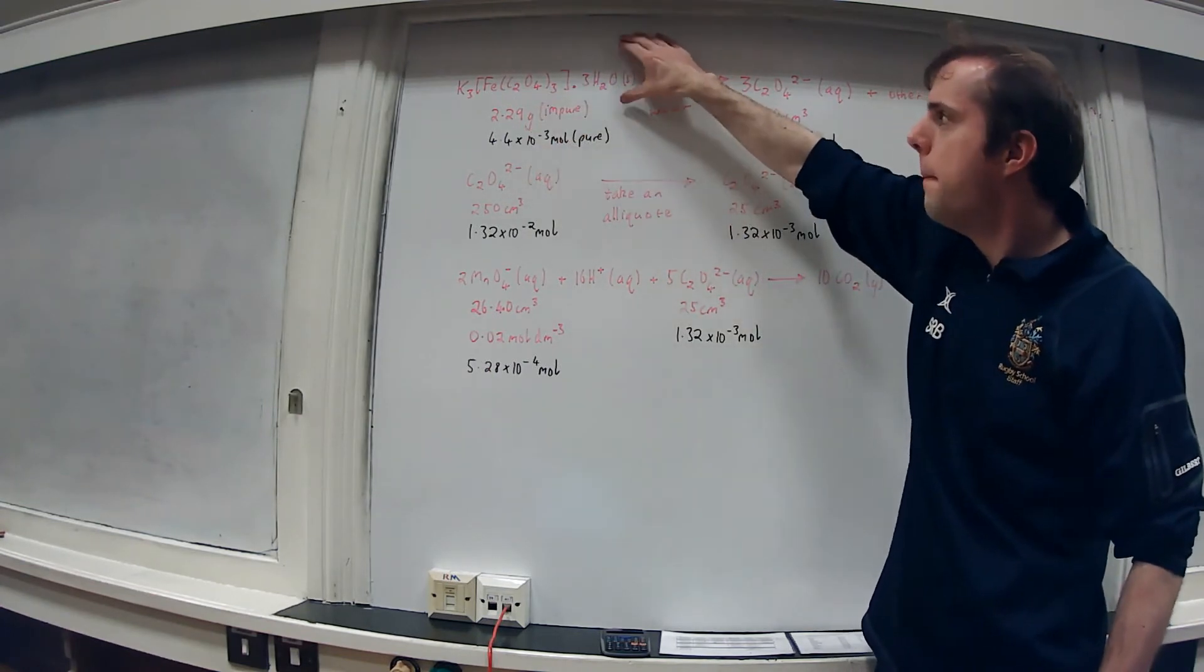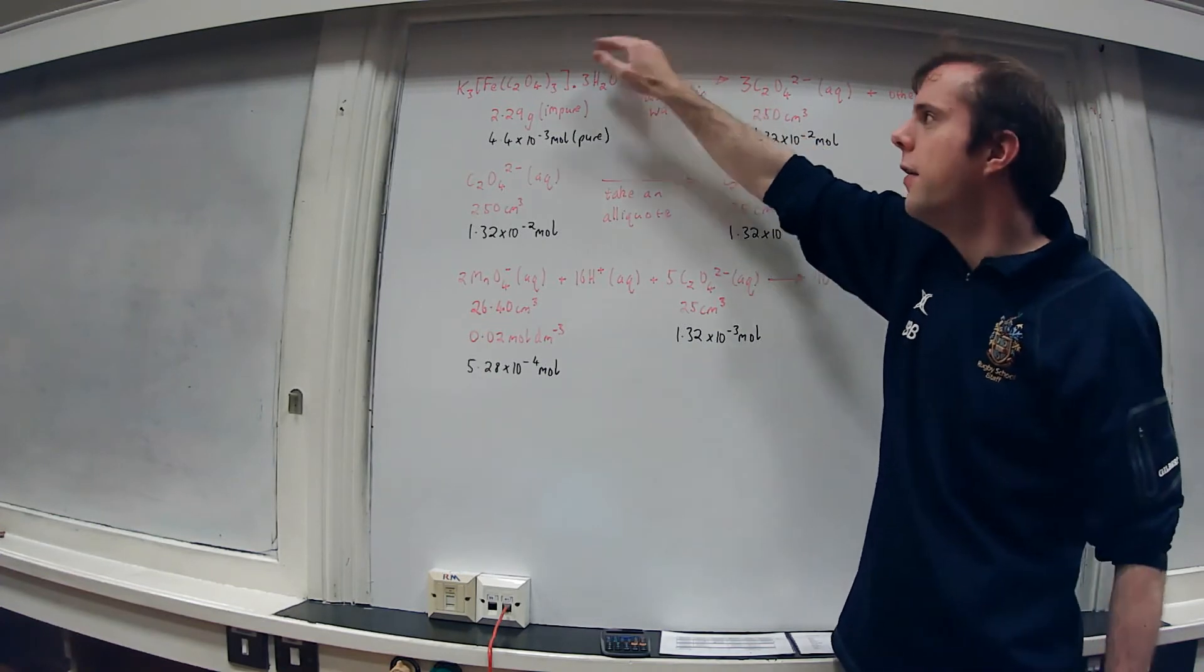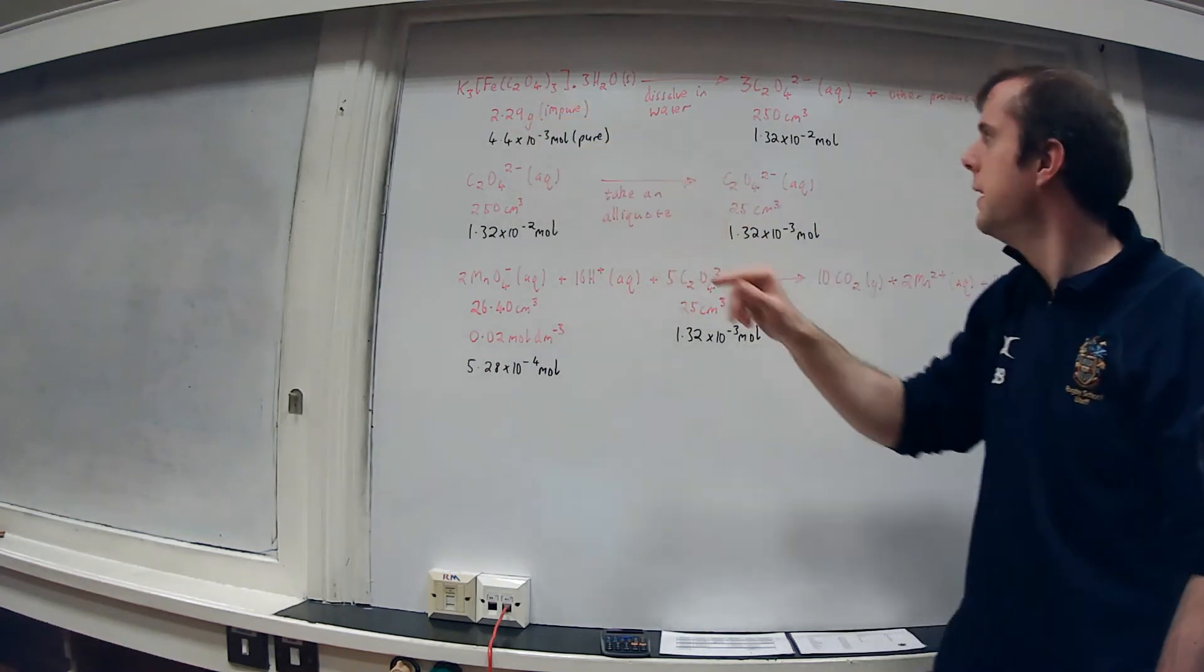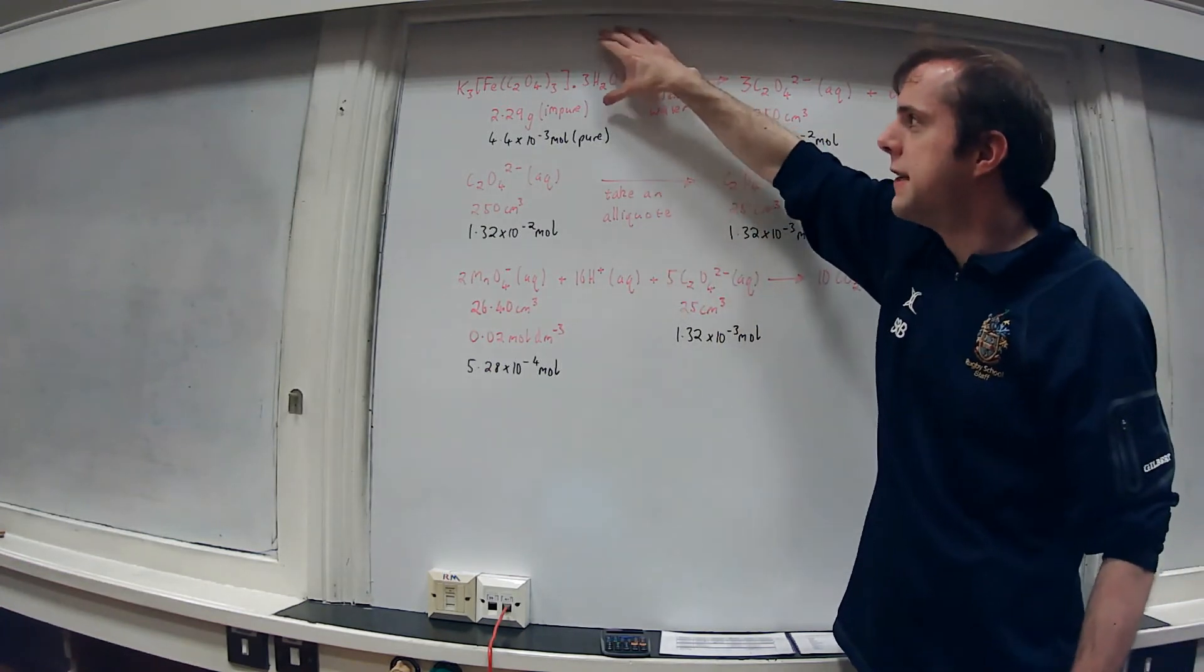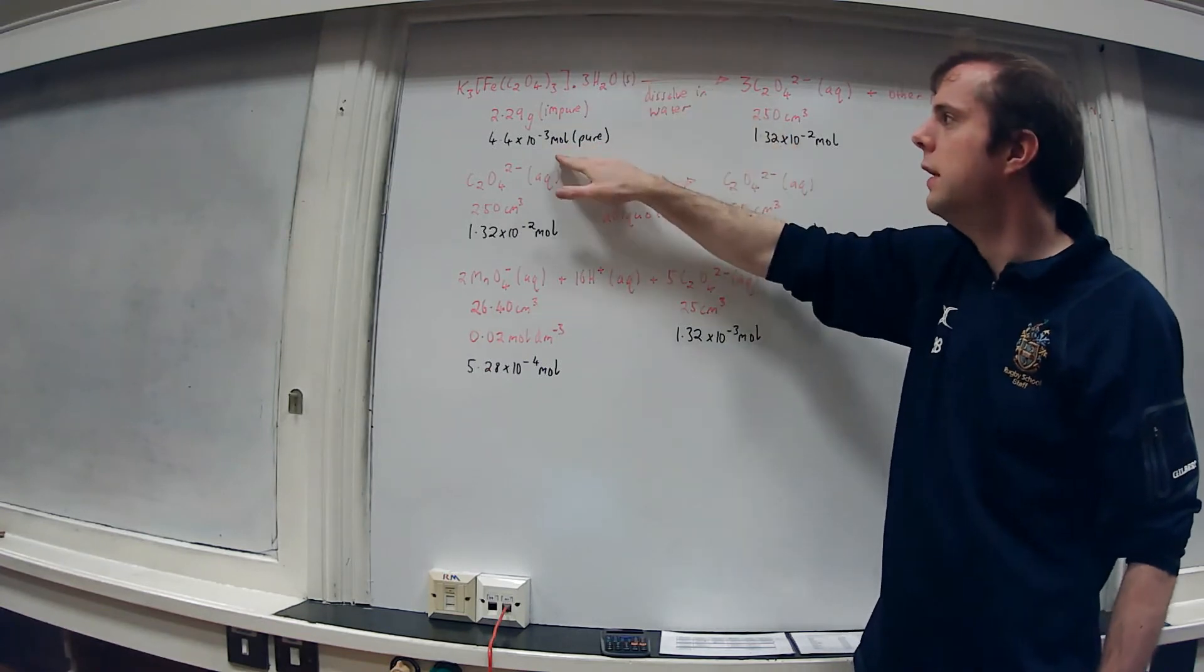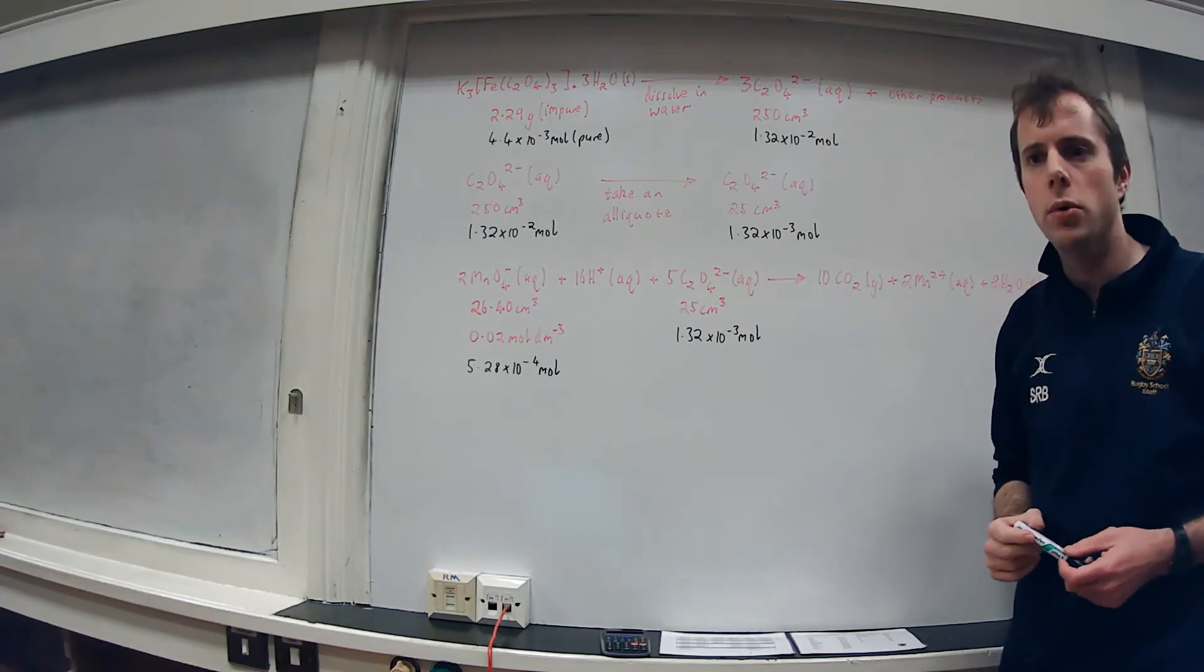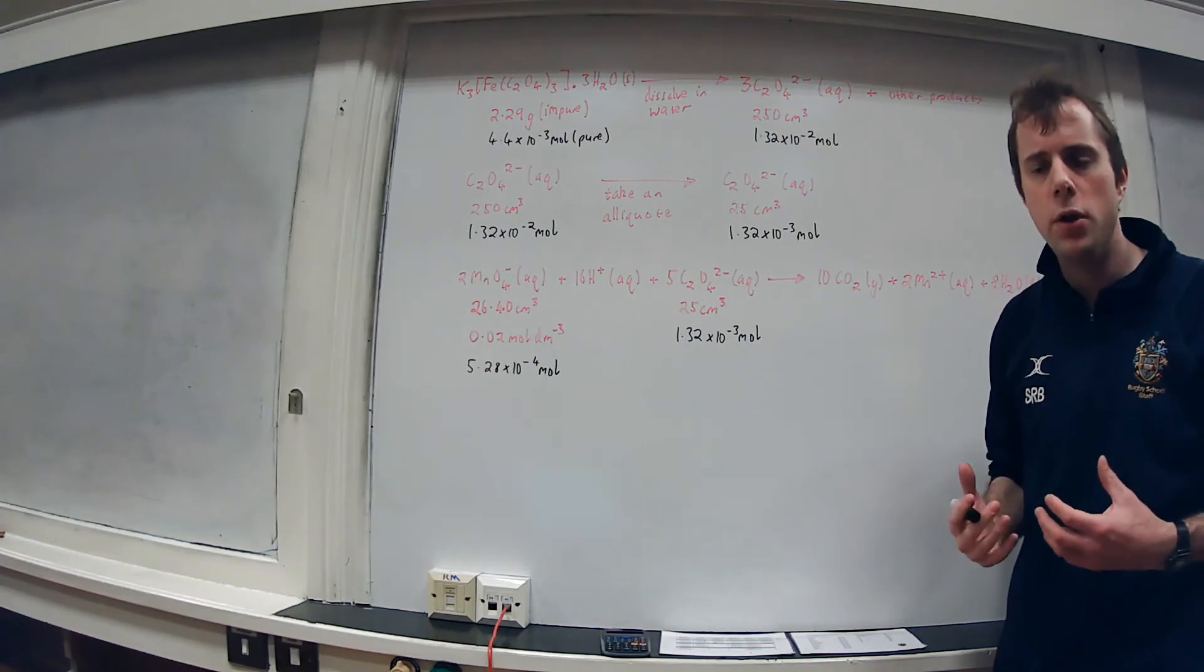I've got one big really complicated formula that we don't need to worry about, but we can see that within it there are three of these oxalate ions. That means that whatever number we have here we divide it by 3, and that tells us the number of this large thing we have on the left. When we divide by 3 we get 4.4 times 10 to the -3 moles, and in brackets after that I've put pure to remind us that that's the pure substance.